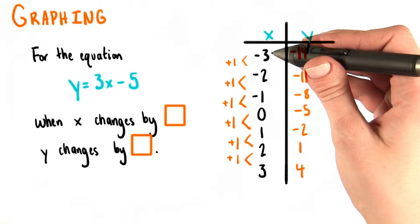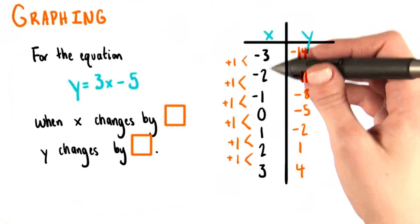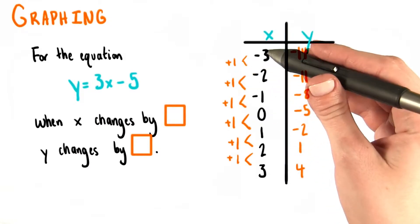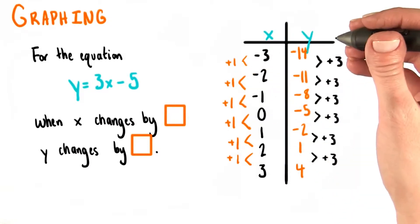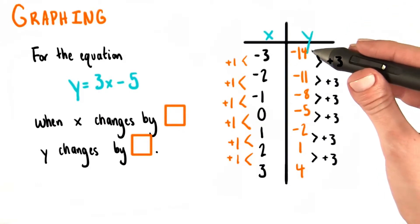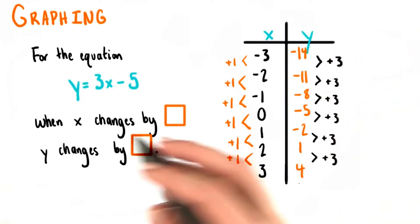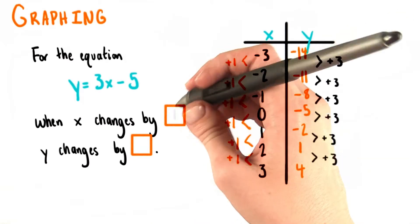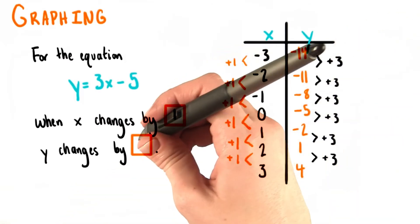Comparing each x value to the one that came before it, as we move down our table, every entry is 1 greater than the one that came before it. If we do the same thing to the y side of the table, we notice that every value is 3 greater than the one before it. So, when x changes by positive 1, y changes by positive 3.